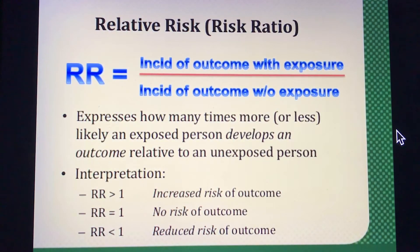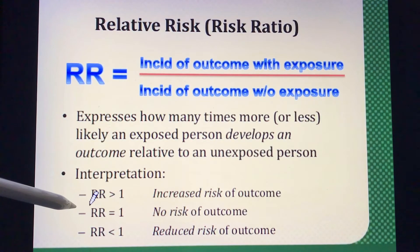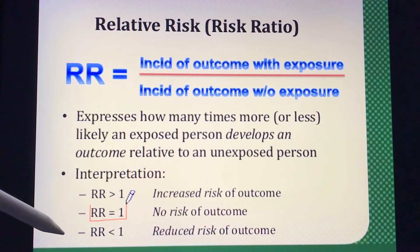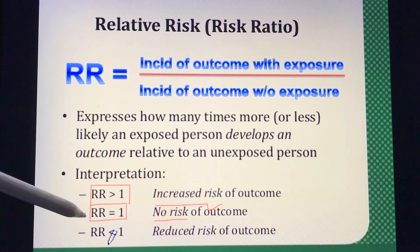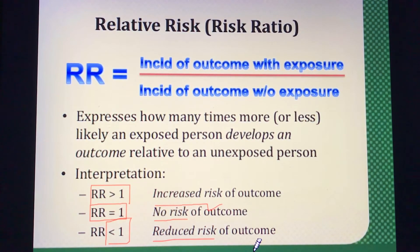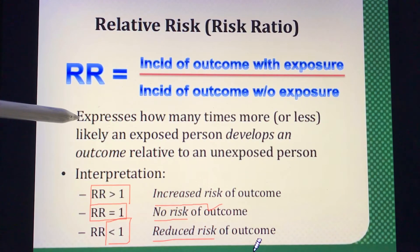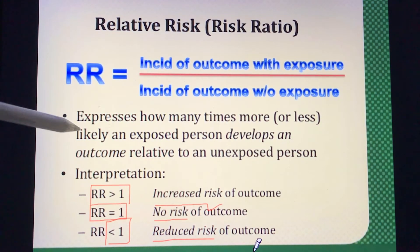So how do we interpret the relative risk? If the relative risk equals 1, that means there is no risk of outcome. If the relative risk is more than 1, that means there is an increased risk of outcome. If it is less than 1, that means there is a reduced risk of outcome. The RR expresses how many times more or less likely an exposed person develops an outcome relative to an unexposed person.